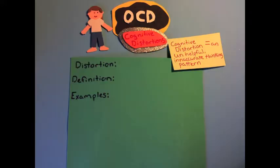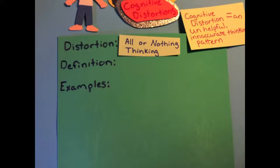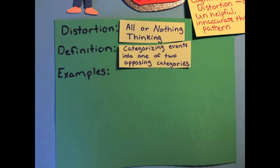So there's a whole variety of cognitive distortions, but I'm just focusing on one today, and that one is all or nothing thinking. This distortion has a couple other names, sometimes it's called black and white thinking, and sometimes it's called either or thinking. Regardless, the definition is you categorize events or people or any other thing into one of two opposing categories.